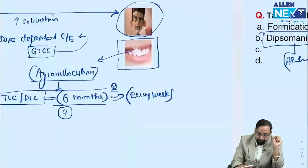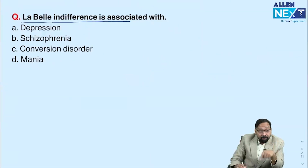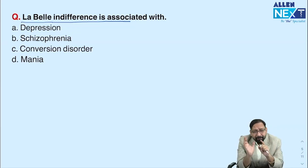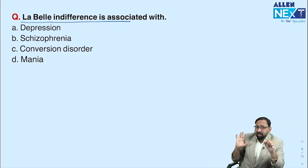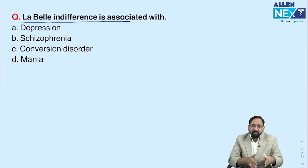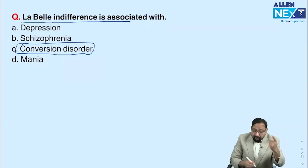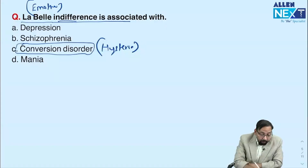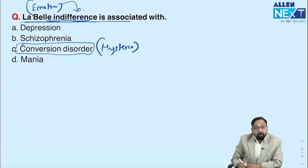Third repeat topic: La Belle indifférence. This is again a repeat from the 2023 exam. The question described a girl who, after some trauma, started having blindness, and her emotions were not matching her loss. Normally, a girl with sudden blindness would be very distressed, crying out to be saved. But in conversion disorder — previously called hysteria — the patient says calmly 'I can't see,' showing La Belle indifférence: emotions do not match the loss.